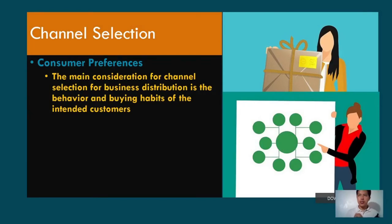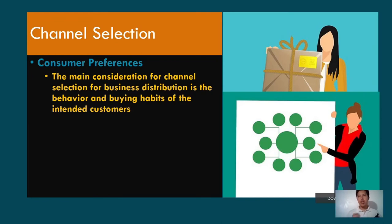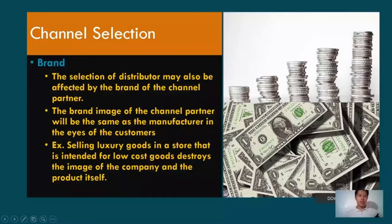In channel selection, there are several elements to consider before deciding who to partner with in a particular geographic location. First is consumer preferences — the main consideration for channel selection is the behavior and buying habits of the intended customers: what are their preferences, where do they prefer to buy, and when will their wants and needs manifest? You must determine consumer preferences so that you can strategically place your products where consumers can purchase them easily and efficiently.